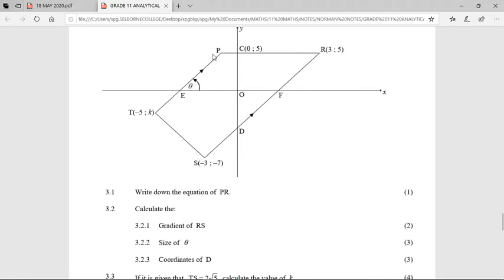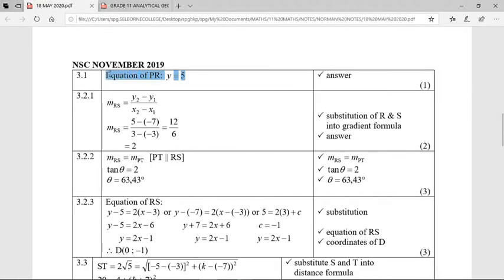The first part, 3.1, says write down the equation of PR. There's PR over there. It's a totally flat horizontal line. Remember, if the line is totally flat, it doesn't really conform to y equals mx plus c. It's simply going to be y equals 5. There's no mx because the gradient of that line, a totally flat line, would be 0. So 0 times x falls away and it's simply y equals 5.